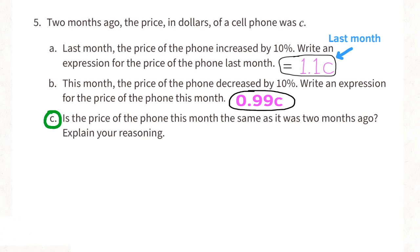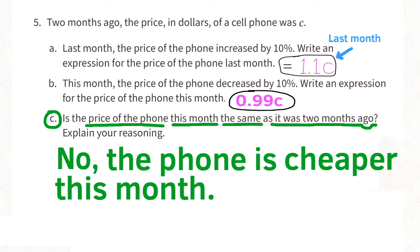Is the price of the phone this month the same as it was two months ago? Explain your reasoning. No. The phone is cheaper this month because 0.99 times C is less than 1 times C.